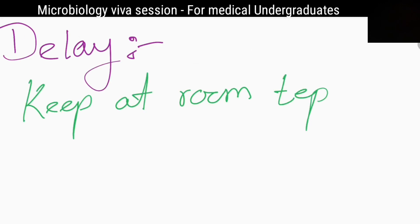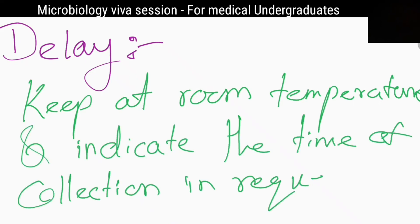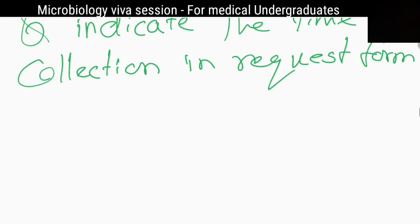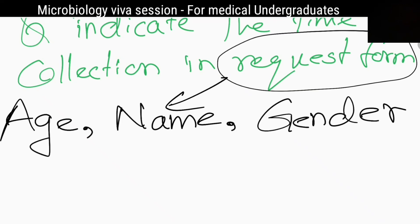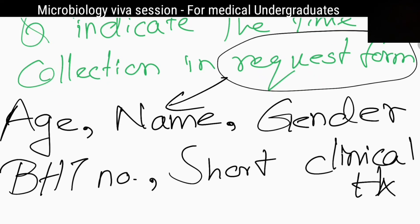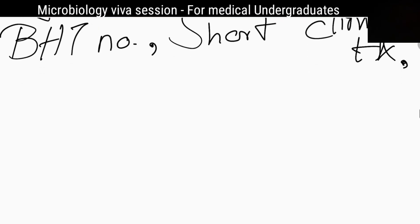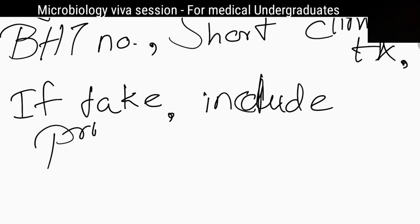What if there is a delay or the laboratory is closed? Keep it at room temperature and indicate the time of collection in the request form. What should you include in the request form? Patient's age, name, gender, BHT number, short clinical history, and if applicable, prior antibiotic dose.